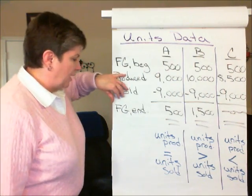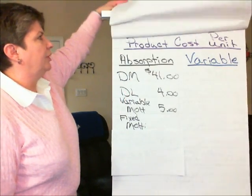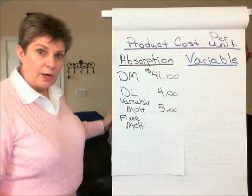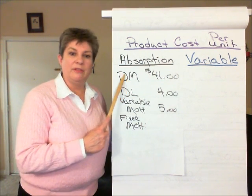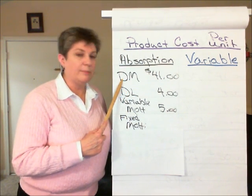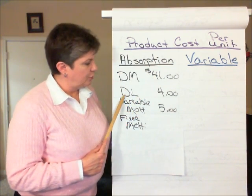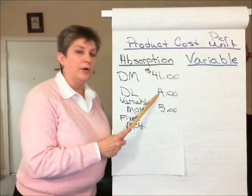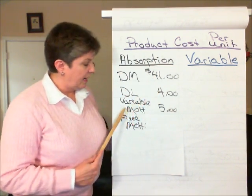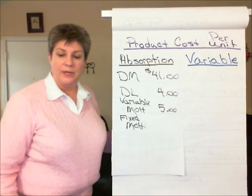In calculating our full product cost per unit under absorption costing, we start with the variable elements: the direct materials of $41, the direct labor of $4 per unit, and the variable overhead of $5 per unit.